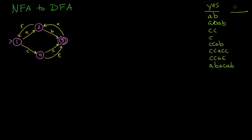Under the 'no' column, these ones are not accepted. Something like just B — we can't do B because there's no way to follow a B from state number one. Likewise, just A by itself won't work, because A puts us in a state that's not an accepting state. We could do something like CBCB — there's no way to get anywhere with a B after following a C. And how about CAA? We could do C, jump over, A, but then CAA leaves us at state number two, so that doesn't work.